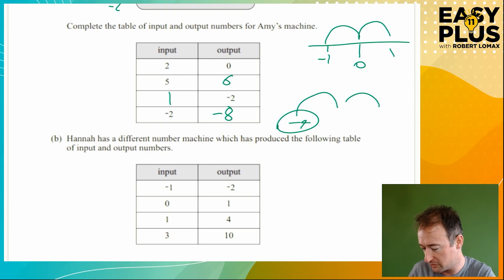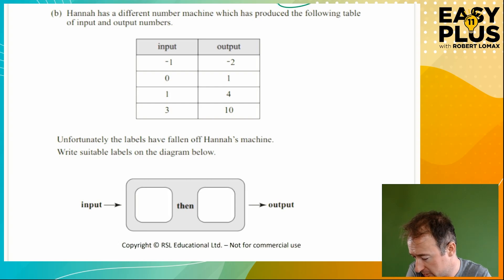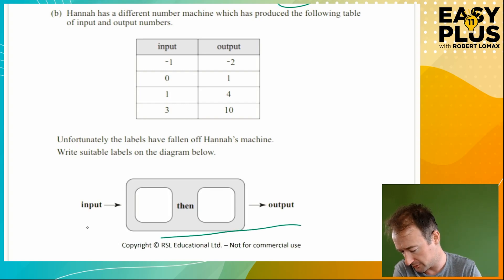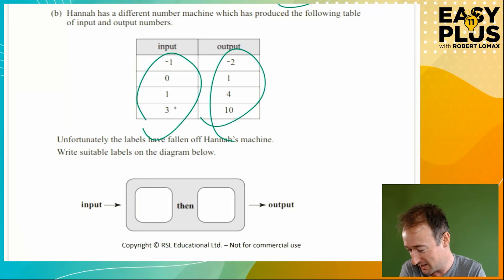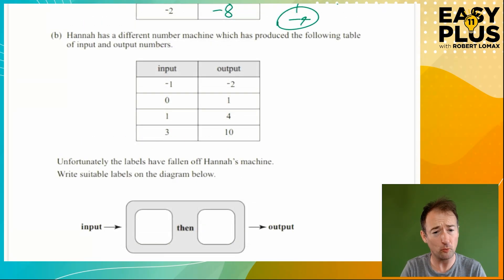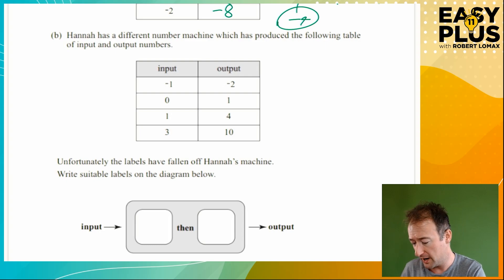Hannah has a different number machine which has produced the following table of input and output numbers: minus 1 gives minus 2, 0 gives 1, 1 gives 4, 3 gives 10. Unfortunately the labels have fallen off — write suitable labels on the diagram. So basically we need to work out what the rules are that turn this input into this output, and we can see there are going to be two rules. There are lots of ways to approach this, but we can be a little more intelligent about it.